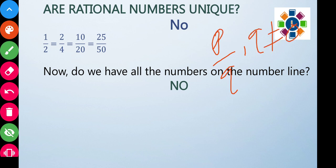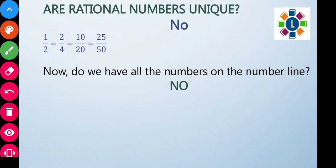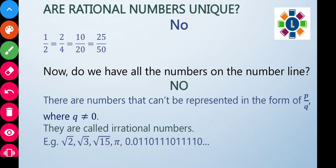But if a number cannot be written in P/Q form with Q not equal to zero, then it is an irrational number. Examples of irrational numbers are root 2, root 3, root 15, and pi — these cannot be expressed in P/Q form.